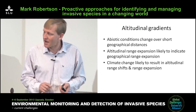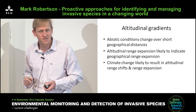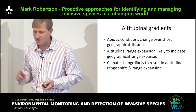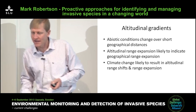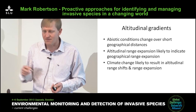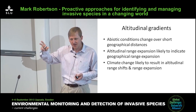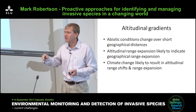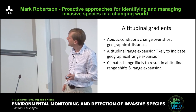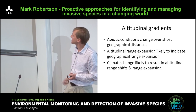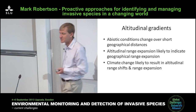The key point about altitudinal gradients is that abiotic conditions change over a short geographical distance — that's the beauty of working across an altitudinal gradient. Altitudinal range expansions are likely to indicate geographical range expansion. If you see a species rapidly expanding its altitudinal range, it's likely also in the process of expanding its geographical range. With climate change specifically, altitudinal range shifts and particularly range expansions in invasives are expected.